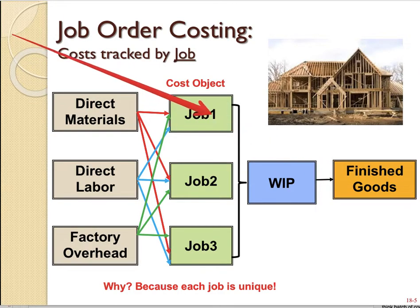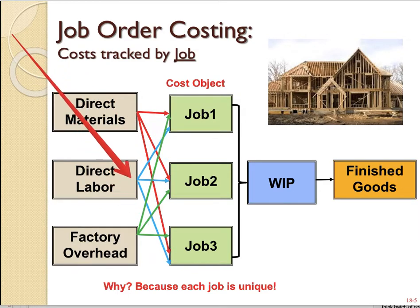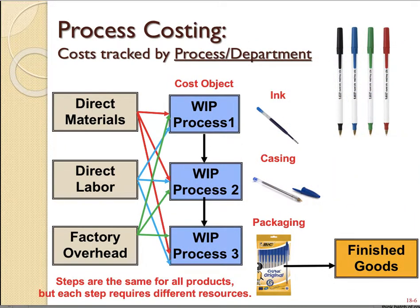The term cost object means the thing that we assign costs to. In job order costing the cost object is the job — we assign direct materials, direct labor, and factory overhead to each job. We do this because each job is unique and requires different amounts of resources, so it makes sense to track by job.